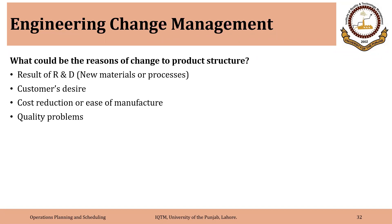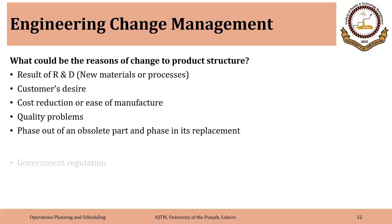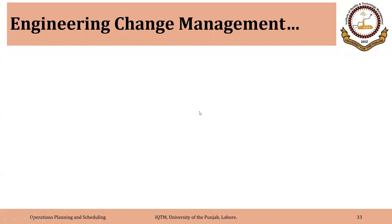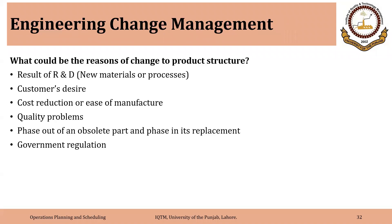Quality problems could also be a reason — the previous product may have had quality issues, so we change the components or features to eliminate those problems. It could also be the phase-out of an obsolete part and phase-in of a new one, since products and components both have life cycles. At the end of a product's life, we introduce similar new products or variants. Additionally, government regulation or other regulatory bodies could also drive changes to components, features, aesthetics, or processes, requiring us to redefine the product.